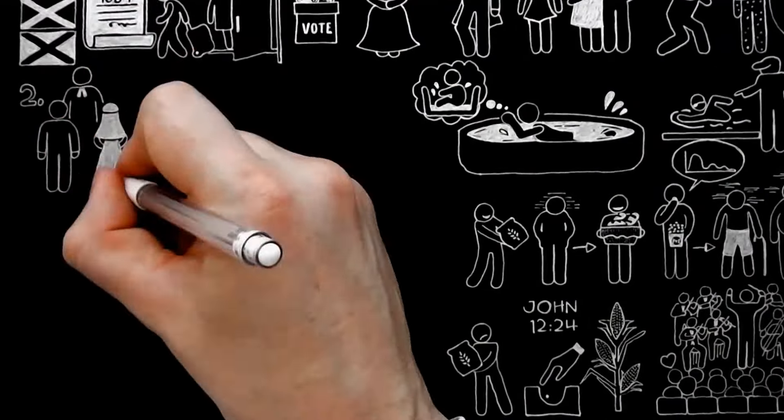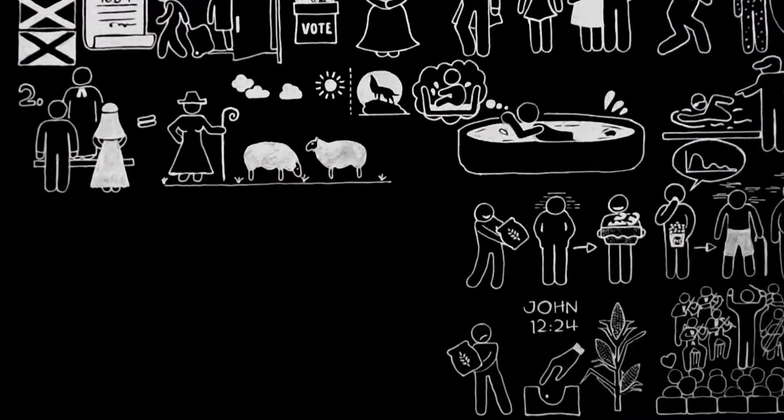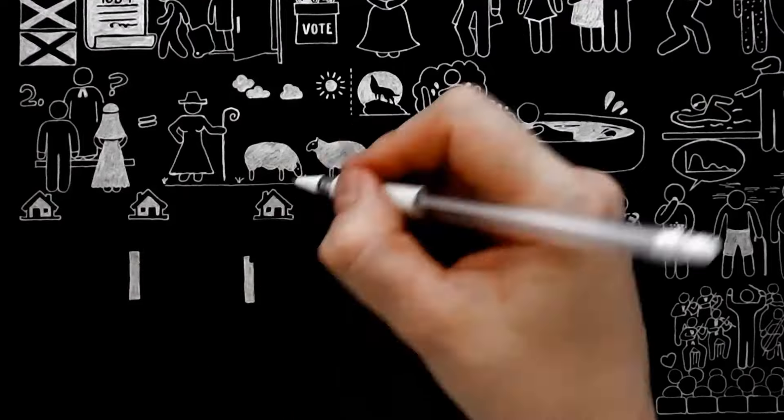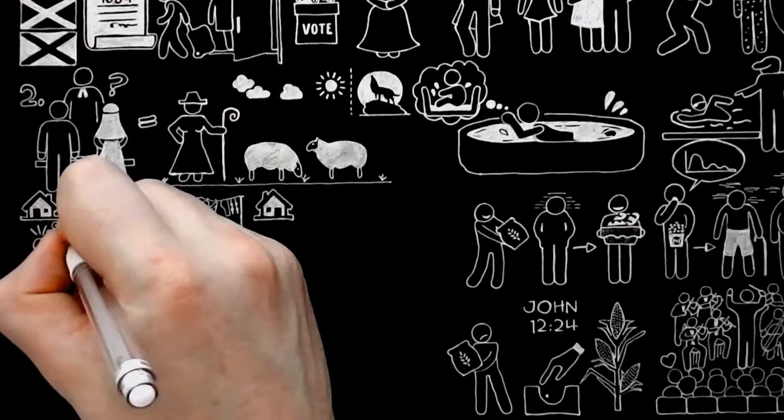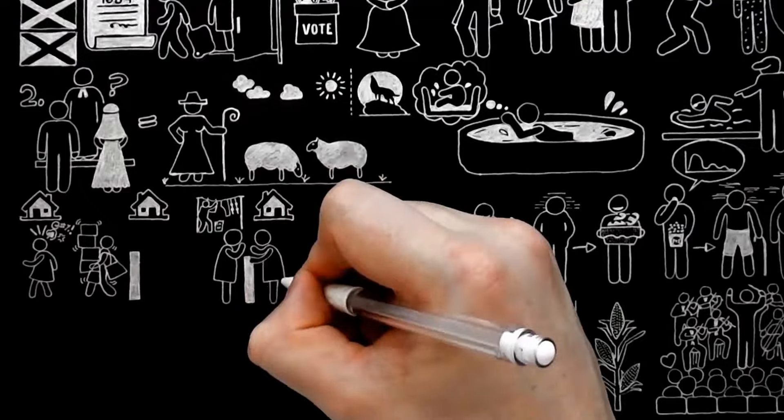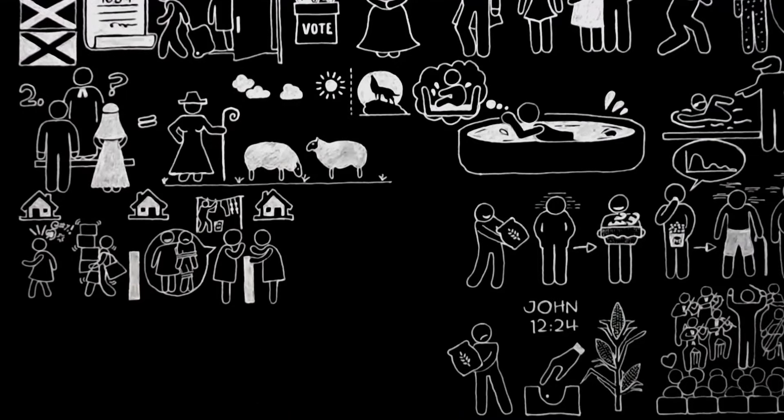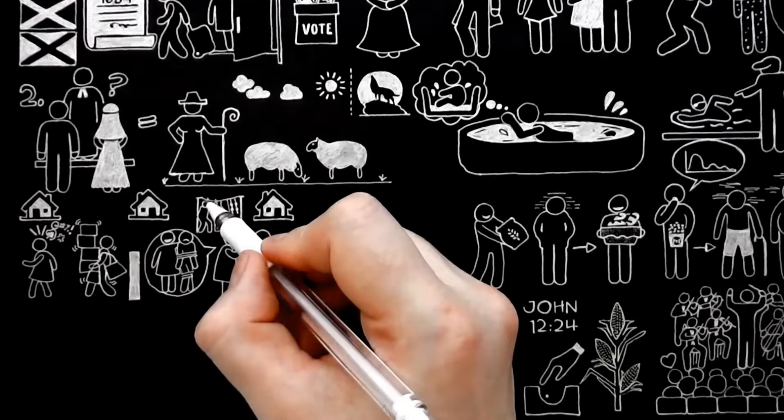Two, if there must be a head, why the man? Well, firstly, is there any very serious wish that it should be the woman? As I have said, I am not married myself, but as far as I can see, even a woman who wants to be the head of her own house does not usually admire the same state of things when she finds it going on next door. She is much more likely to say, 'Poor Mr. X, why he allows that appalling woman to boss him about the way she does is more than I can imagine.' I do not think she is even very flattered if anyone mentions the fact of her own headship. There must be something unnatural about the rule of wives over husbands, because the wives themselves are half ashamed of it and despise the husbands whom they rule.